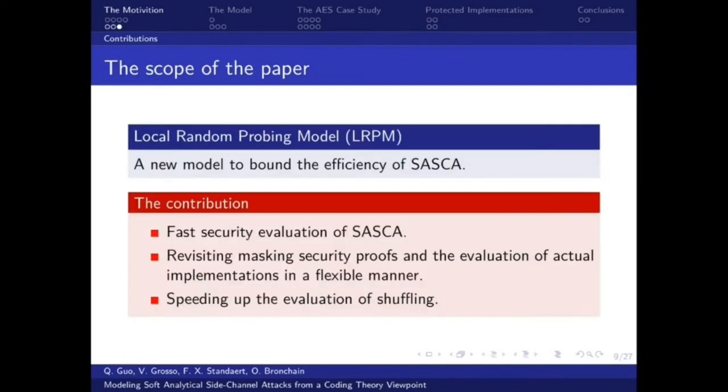So the scope of this paper is to investigate the evaluation of SASCA. We propose a new model called Local Random Probing Model, LRPM, to bound the efficiency of SASCA. This model allows fast security evaluations of SASCA. This model allows revisiting masking security proofs and the evaluation of actual implementations in a flexible manner. This model allows speeding up the evaluation of shuffling.